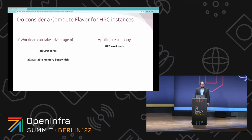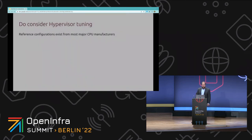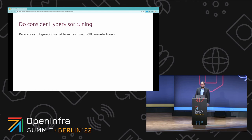Consider dynamic frequency scaling — some workloads can make greater use of it, such as when not all cores are in use or when memory bandwidth is the limiting factor. Also consider hypervisor tuning: reference configurations exist from all major CPU manufacturers. Try them and validate, as they often provide guidance on BIOS settings and other settings to maximize performance of the underlying hardware.